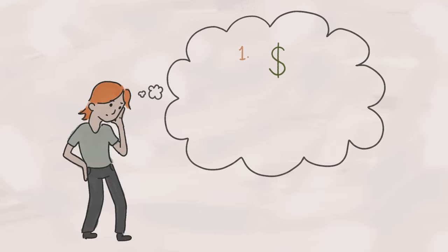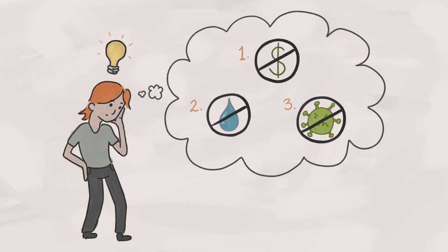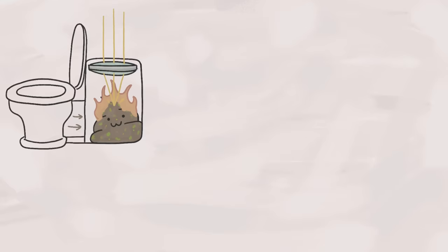Ideally, we'd have an option that is relatively cheap, doesn't use too much water, and destroys pathogens on site. And there are some good ideas out there, like this solar toilet that concentrates the sun's rays to burn poops into harmless charcoal.